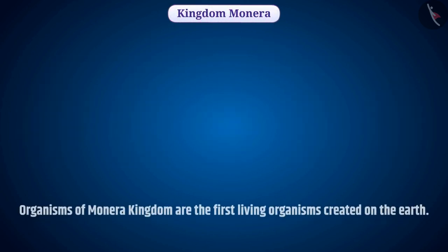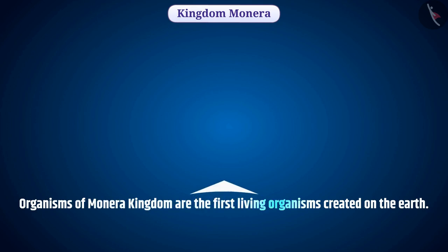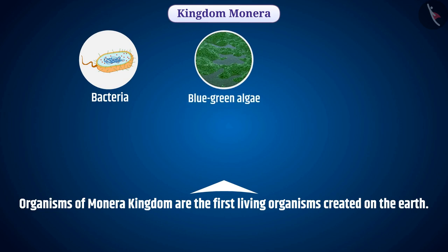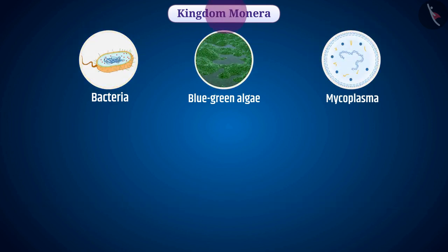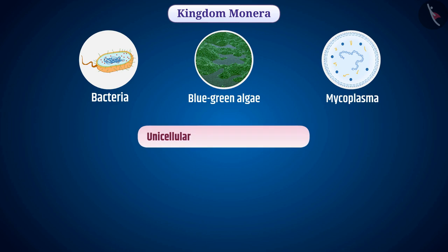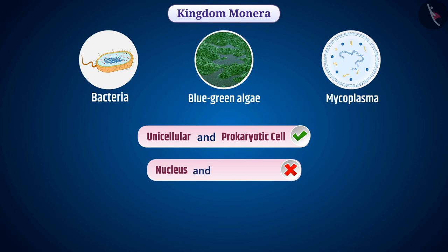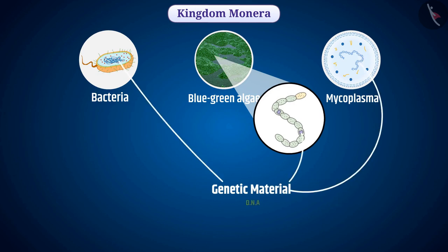Organisms of Monera Kingdom are the first living organisms created on the earth, such as bacteria, blue-green algae i.e. cyanobacteria, mycoplasma, etc. All the organisms in this kingdom are unicellular and their body is made up of a prokaryotic cell — the cell does not have an organized nucleus and cell organelles. Among them, genetic material DNA is made up of a single circular molecule.